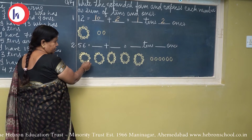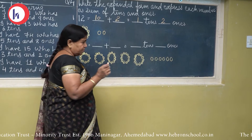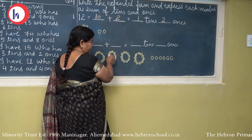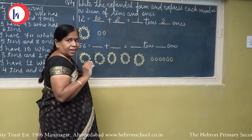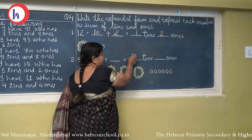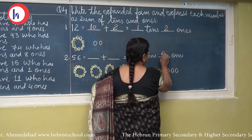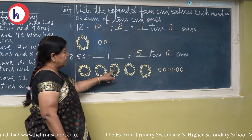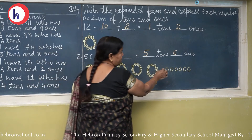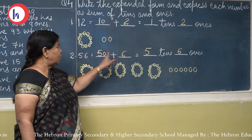Now I will go to question number 4. Question 4 is: write the expanded form and express each number as sum of 10s and 1s. Now to write this number in expanded form in terms of 10s and 1s. Let us see — 1, 2, 3, 4, 5, 6, 7, 8, 9, 10. How many 10s are here? 1 ten. And how many 1s are here? 2 ones. So write here: 1 ten and 2 ones. 1 ten means 10, and 2 ones. So 10 plus 2 = 12.